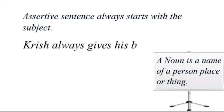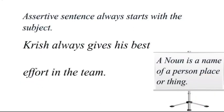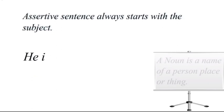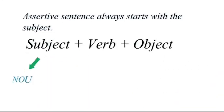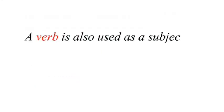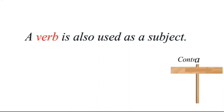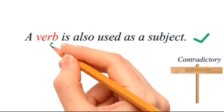'Krish always gives his best effort in the team' — 'Krish' is the subject, which is a noun. 'He is a good leader' — the subject is 'he,' which is a pronoun. So a subject can be either a noun or a pronoun. Now what if a verb is also used as a subject? That sounds contradictory, but it's true — a non-finite verb can also be used as a subject.